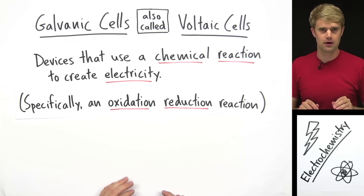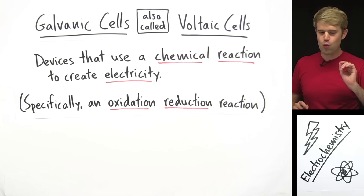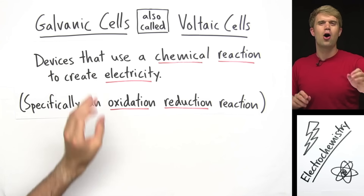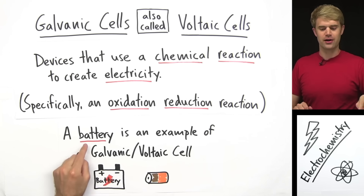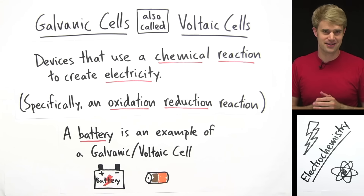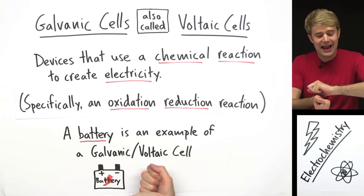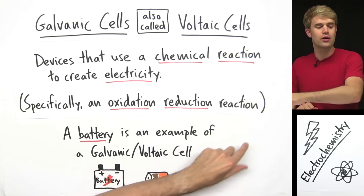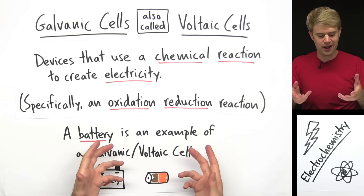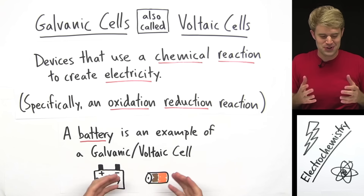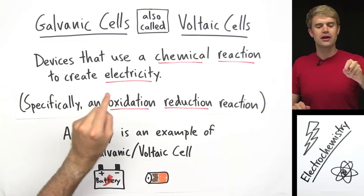Galvanic or voltaic cells may be totally new terms for you, but you likely use these devices almost every single day of your life. That's because a battery is an example of a galvanic or voltaic cell. There are chemicals inside batteries that react together in an oxidation reduction reaction to make electricity, which powers your cell phone, flashlight, or whatever the battery is hooked up to.